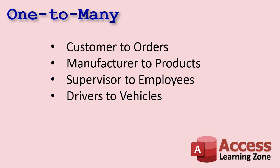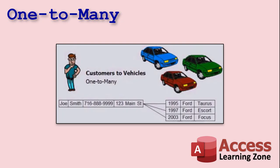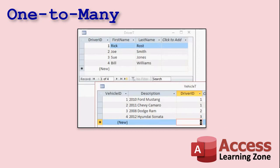A one-to-many relationship is the relationship that most people are familiar with. Customer to orders: one customer places multiple orders. Manufacturer to products — for example, Ford is the only one that makes the Taurus, and they make multiple different types of cars, but they all come from one manufacturer. Supervisor to employees. Drivers to vehicles. One of the examples I like to use in my full class: customers to vehicles. Joe Smith here owns three different cars — a Taurus, a Focus, and an Escort. So that's a one-to-many relationship: one owner to multiple vehicles.